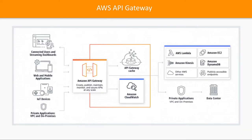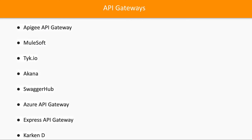For AWS API Gateway, you create it on the AWS console and connect it to either Lambda or HTTP backend services running somewhere via HTTP mapping. You can also enable WebSocket services on the API Gateway. Requests from mobile, desktop, web, IoT — any client — all talk to the API Gateway as a single entry point. The gateway then routes to your EC2 instance, a Lambda function, a service on a Kubernetes cluster, or anywhere else.